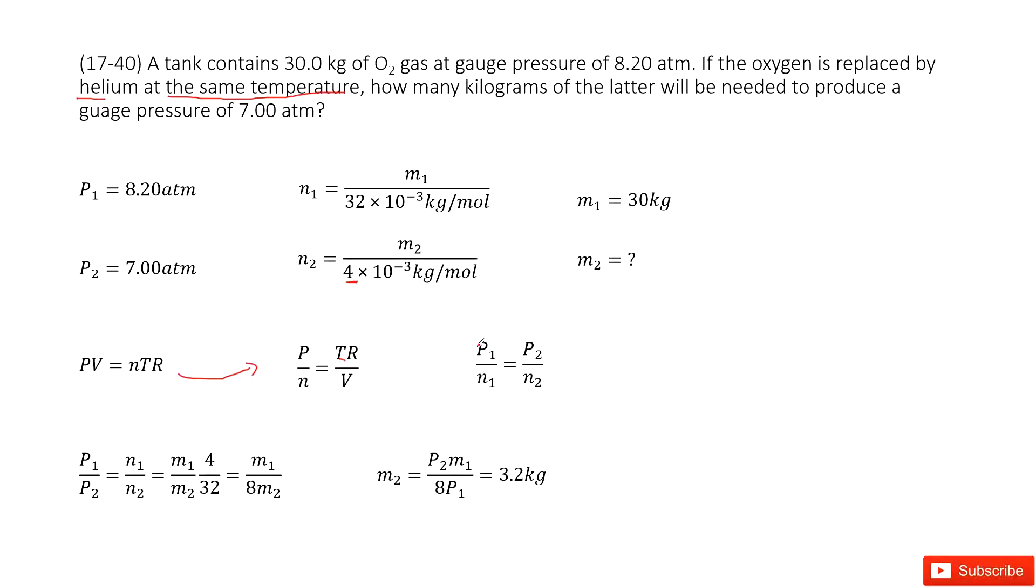So for the initial state, P1 over N1 equals P2 over N2. But we need to find M2, which is related to N2.